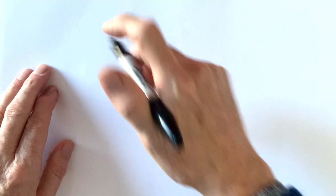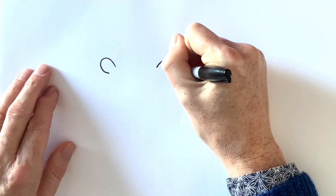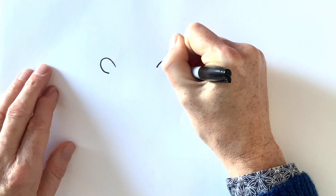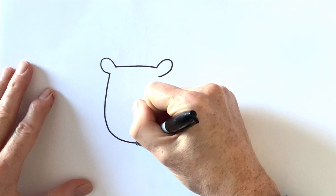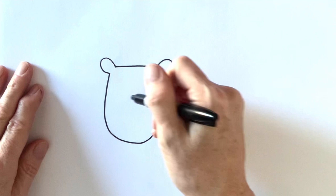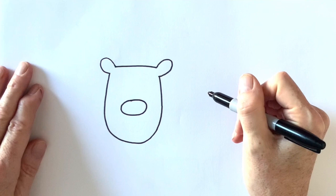How about drawing a reindeer next? So what I'm going to do first is draw two reindeer ears and join them together with a straight line. Then I'm going to draw a longish face for my reindeer like that and an oval shaped nose right in the middle.